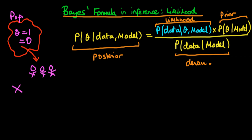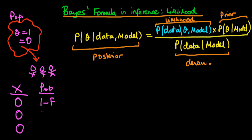We know that for these individuals their infected status is all asymptomatic — in other words, none of them actually have the disease. I'll use the letter X to denote the infected status of each individual. Individual one is not infected, individual two is not infected, and individual three is not infected. We use the letter F to denote the probability that an individual in a tribe is infected, so each individual has a probability of one minus F of not being infected.